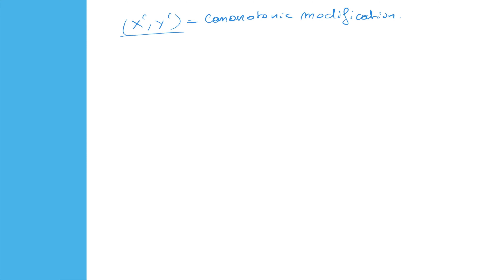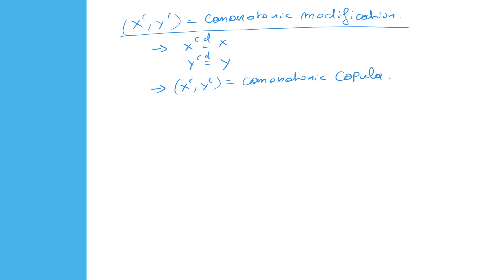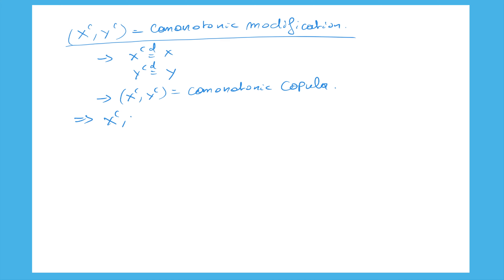In this exercise we repeat the same analysis for the comonotonic modification. We look at the random vector XC, YC, which has the same marginal distributions as the original random vector — XC has the same distribution as X and YC the same as Y — but XC, YC is assumed to have a comonotonic copula. We know from our results on comonotonicity that XC, YC is given by the inverse of X and the inverse of Y evaluated at some uniformly distributed random variable U.